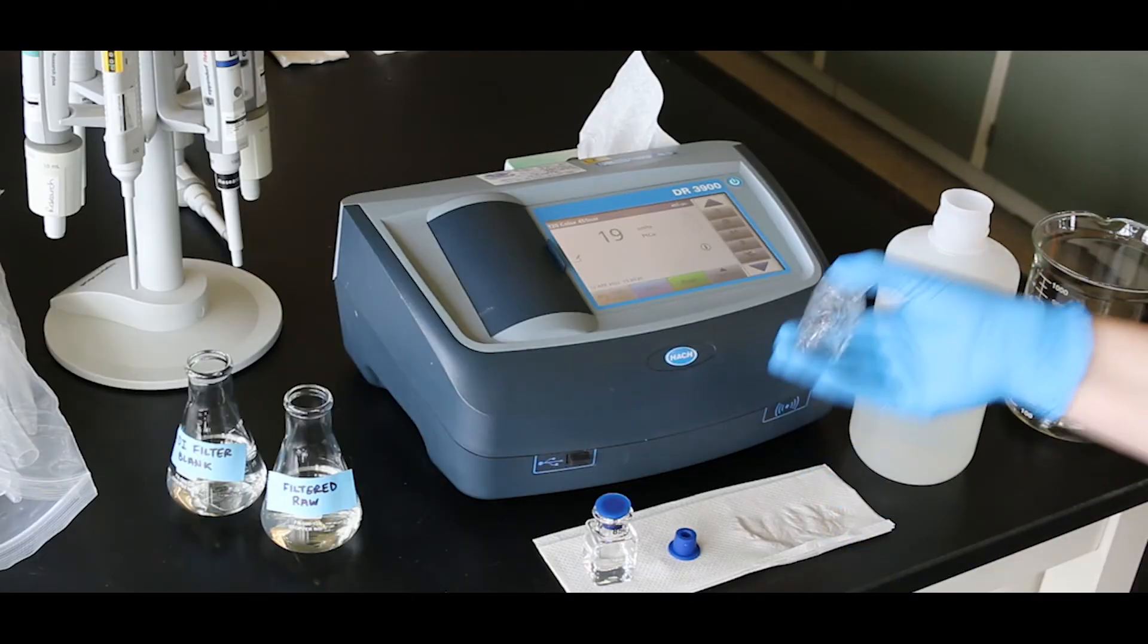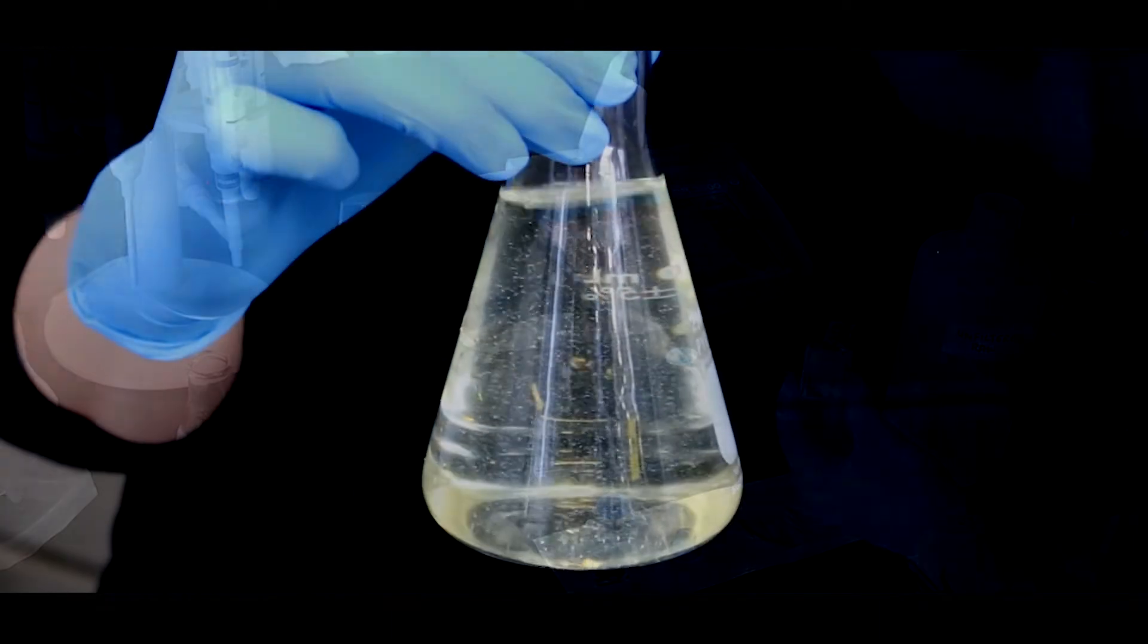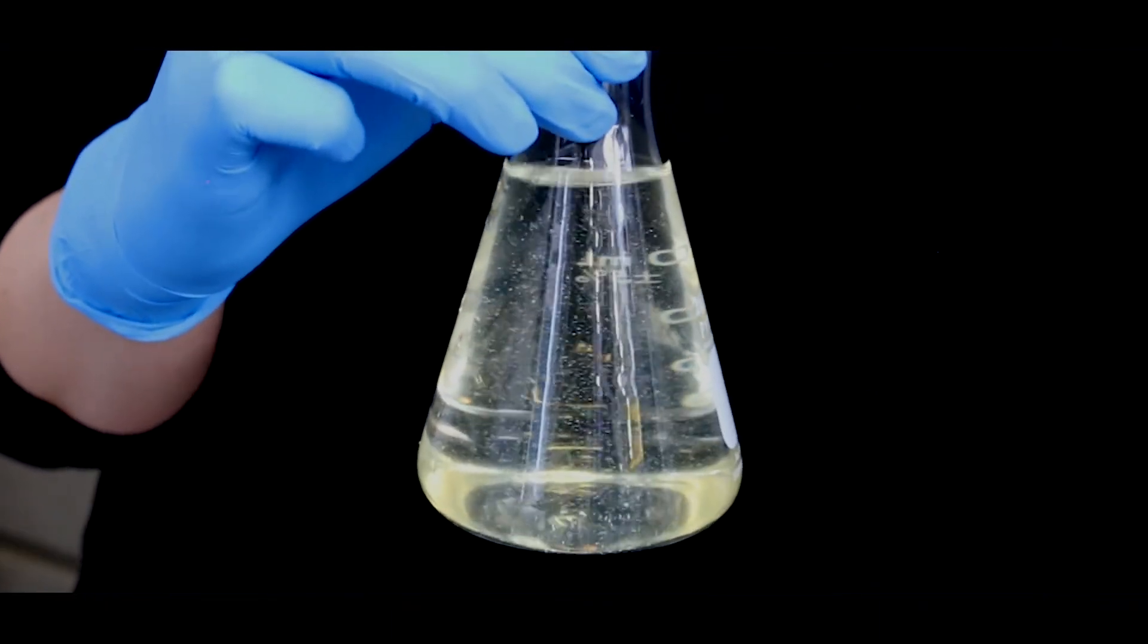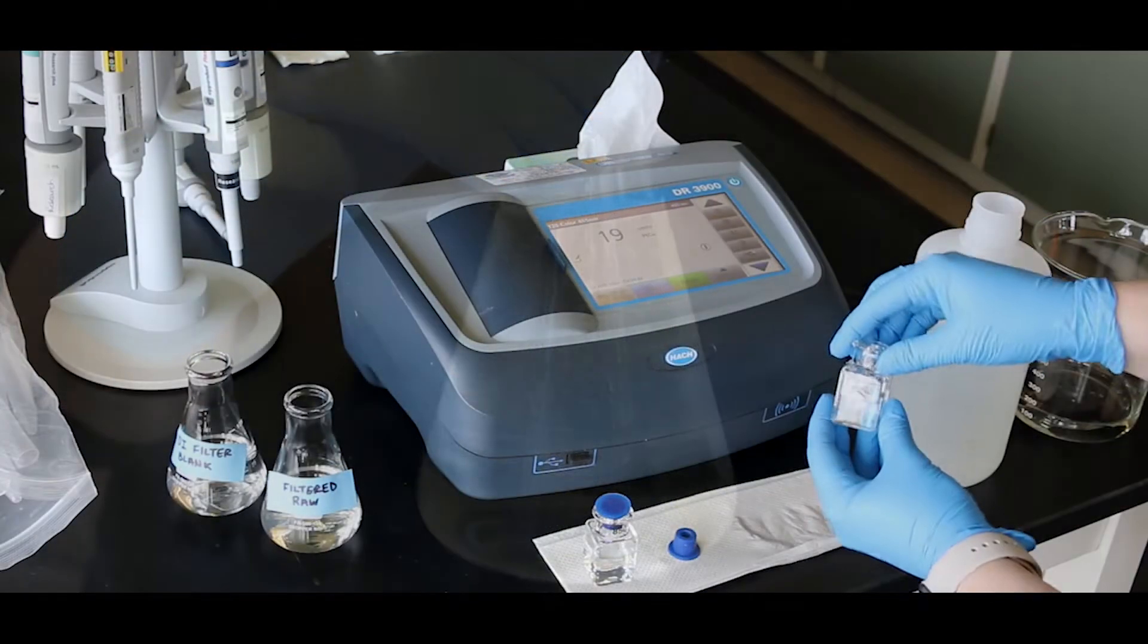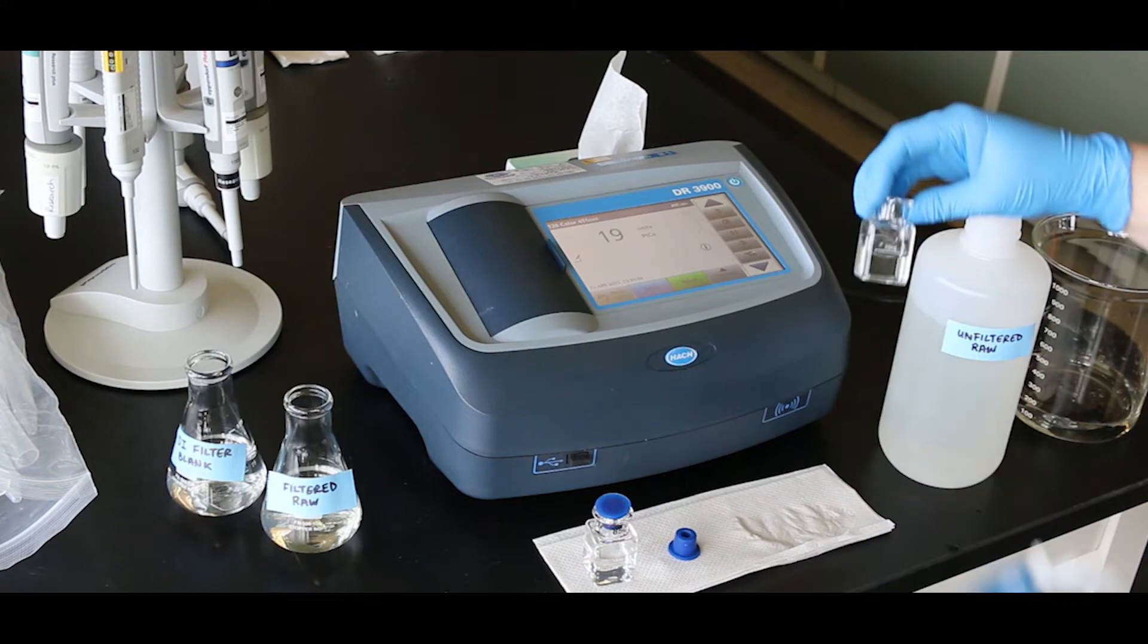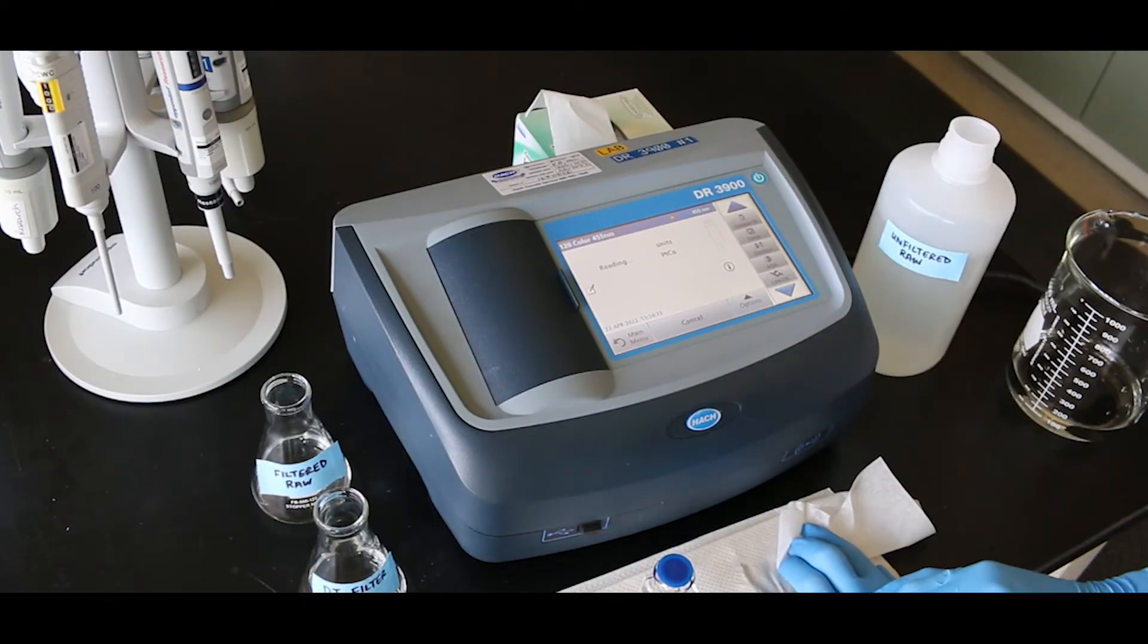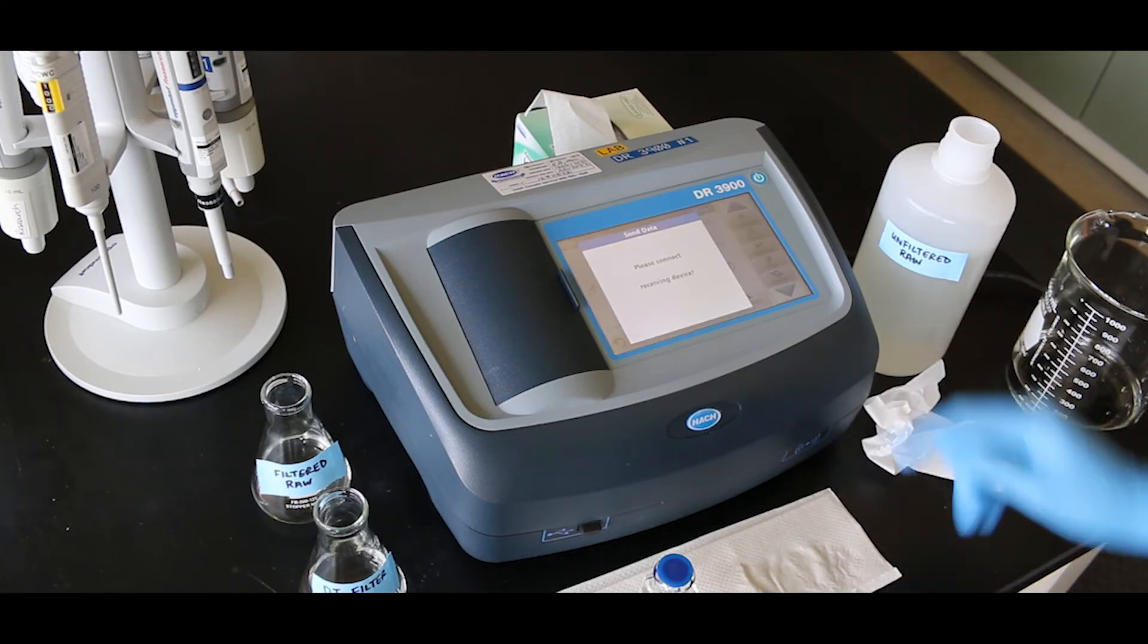Prepare the sample by rinsing and filling with the sample water. Be sure to agitate the sample water if it has been sitting to re-suspend the matter. Clean the outside of the sample cell and insert it into the instrument. Press read. This value will be your apparent color measurement. Record the results in platinum-cobalt units.